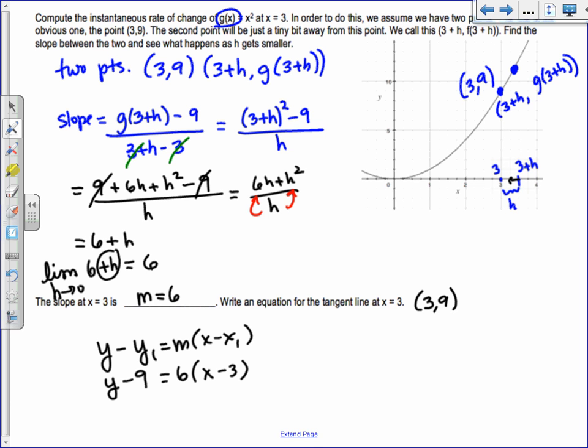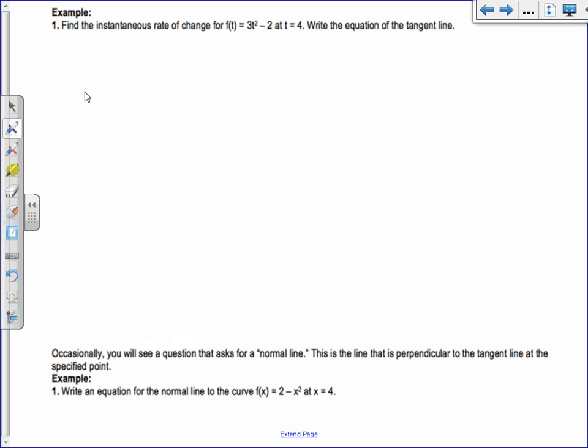Let's try another one. Find the instantaneous rate of change for f(t) = 3t² - 2 at t = 4. Write the equation of the tangent line. Don't be like, oh I'm so smart, I learned derivatives in physics. You have to do it the long way until I teach you shortcuts.